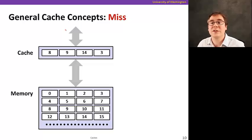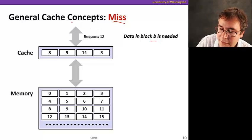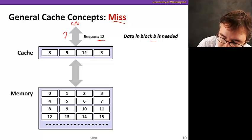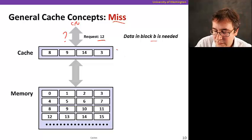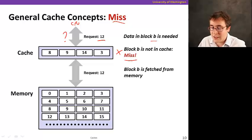This is in contrast to what we call a miss. So suppose that a data block B is needed by the CPU here. And we happen to need 12. So we're going to ask, is 12 here? Well, the answer is no, it's not. So it's a miss. So what happens now? What do you think? Well, we're going to have to go to memory and get the data.